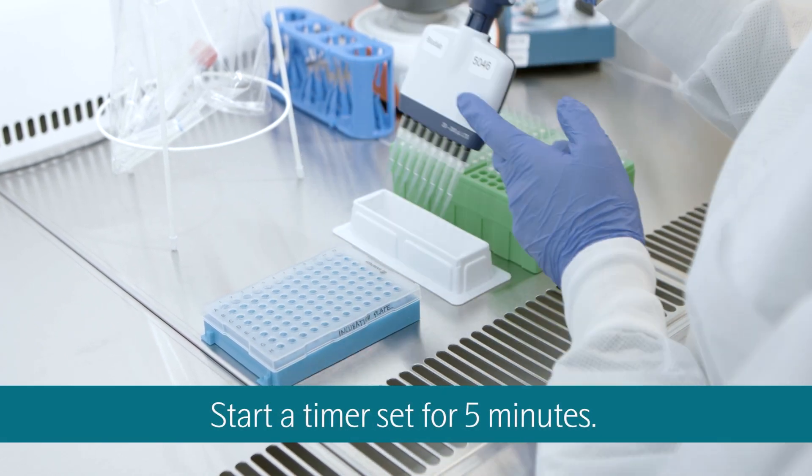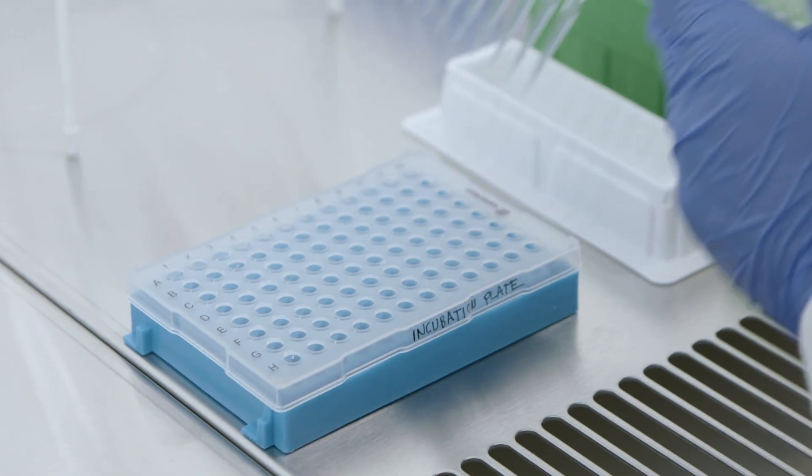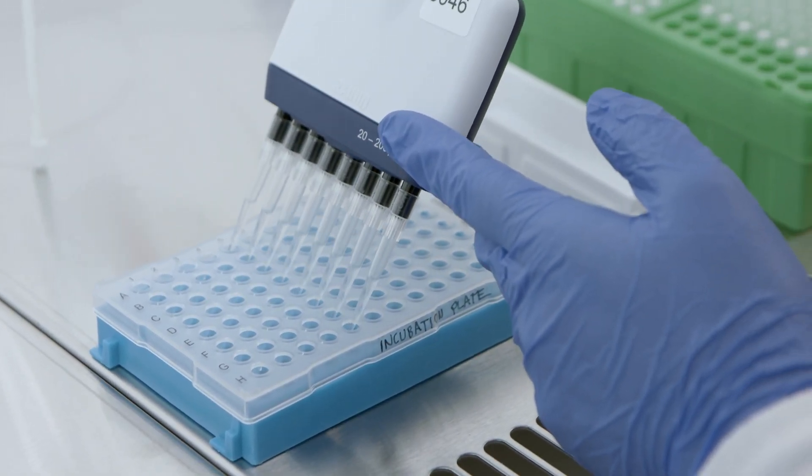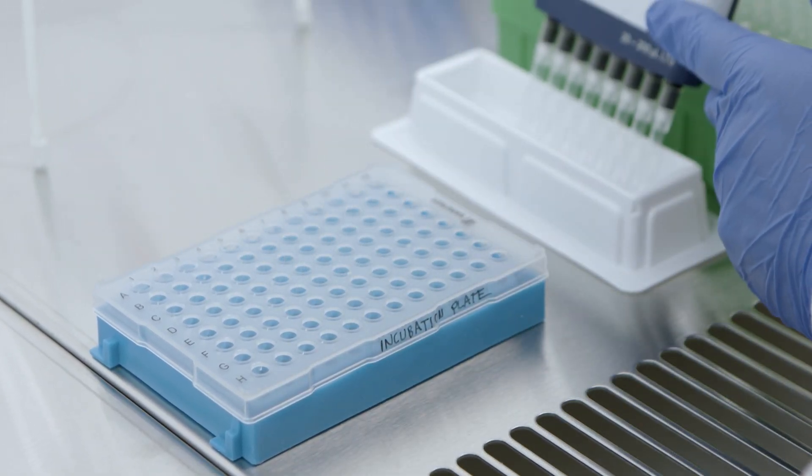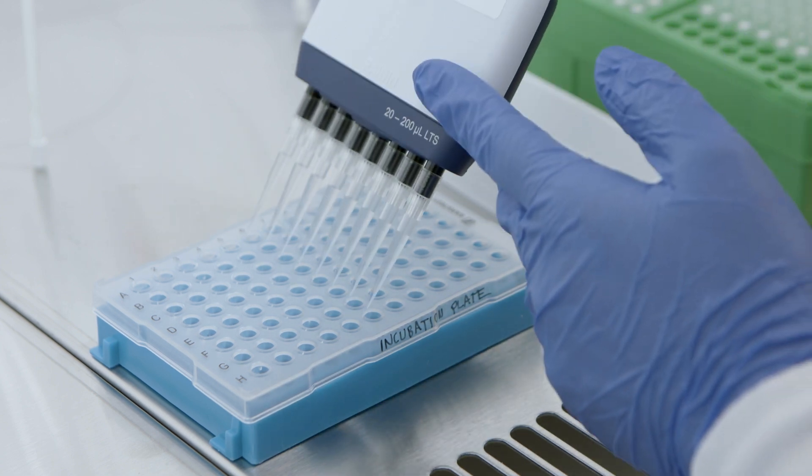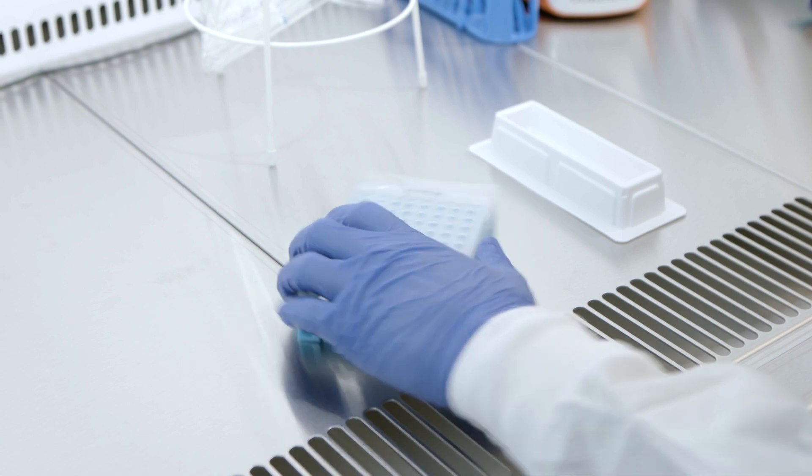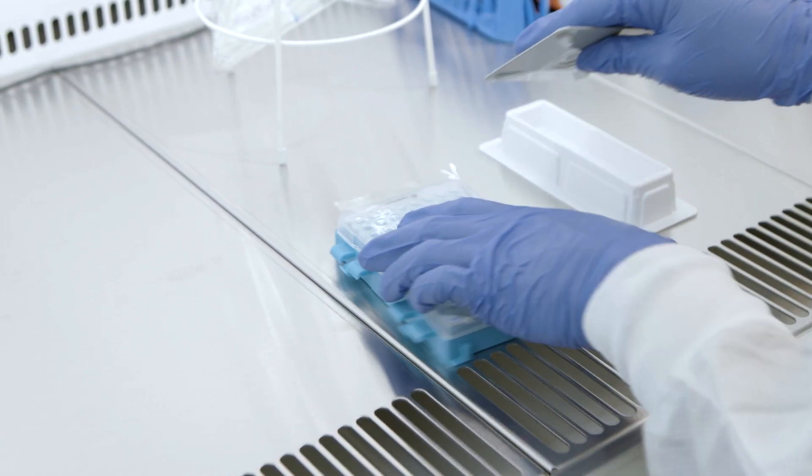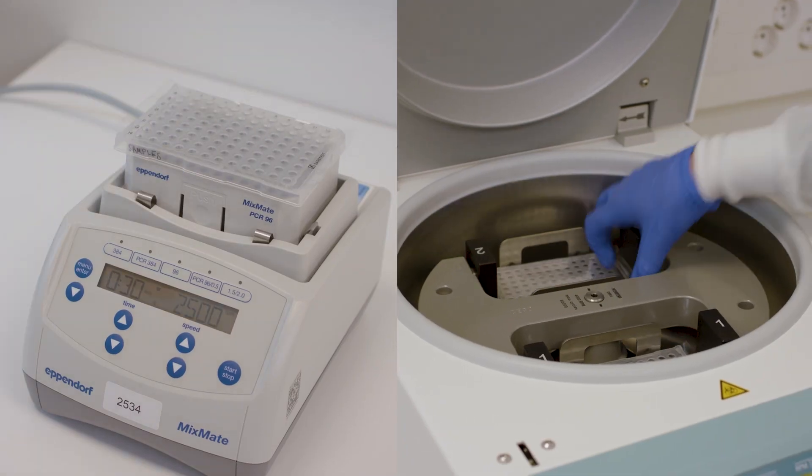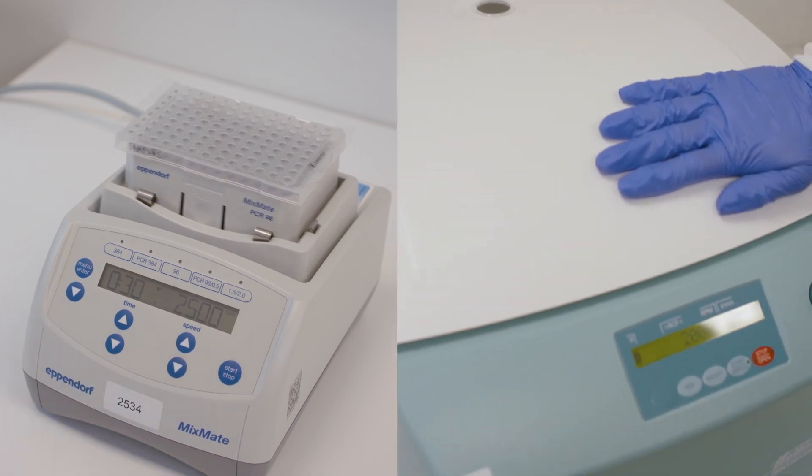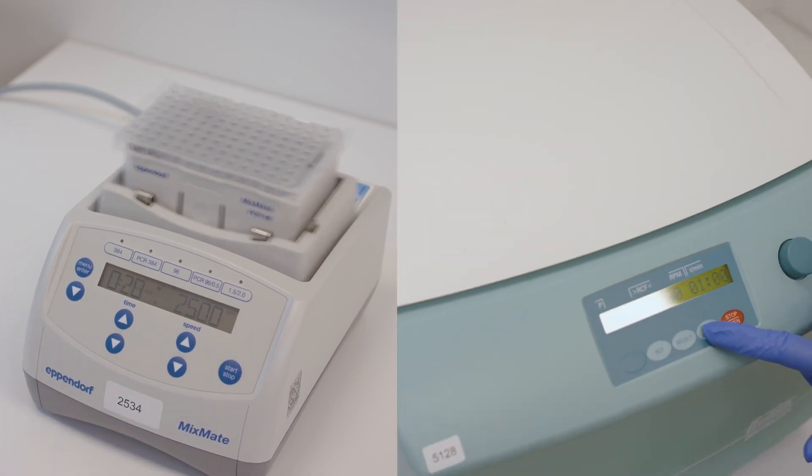Start a timer set for 5 minutes and transfer 96 microliters of extension mix to the incubation plate using reverse pipetting. Seal the plate with a new adhesive plastic film and vortex thoroughly to ensure all wells are mixed before spinning it down for use in the next step.